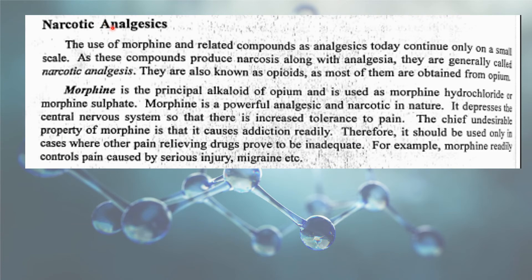Narcotic analgesics: morphine-related compounds are generally called narcotic analgesics because they induce addiction. Morphine is the principal alkaloid of opium. It is a powerful narcotic and analgesic in nature. It depresses the central nervous system so that there is increased tolerance to pain.